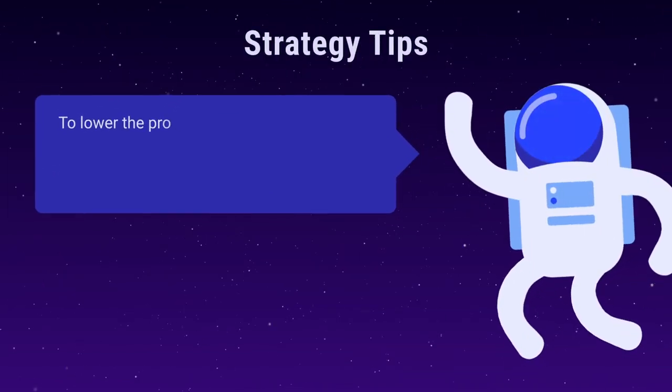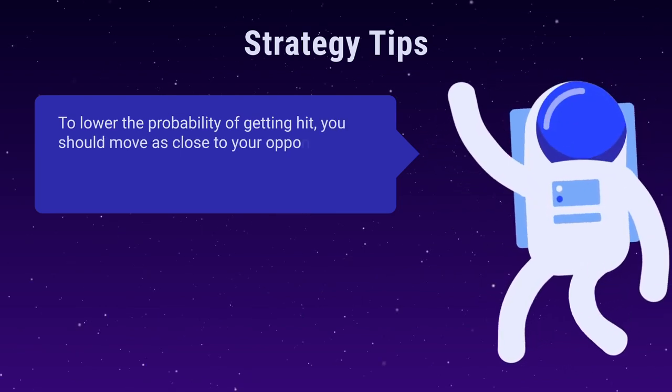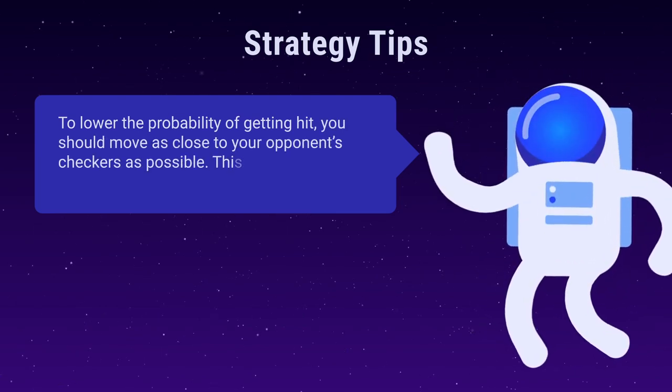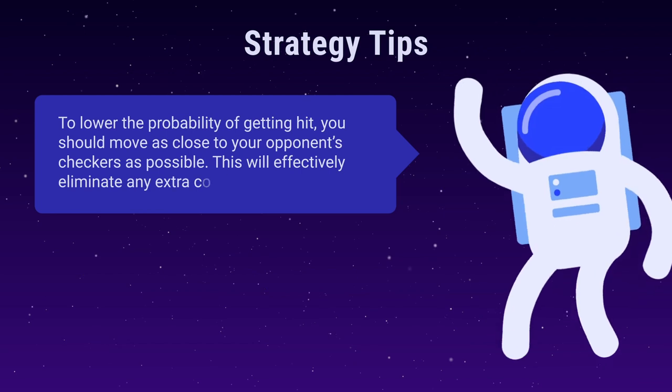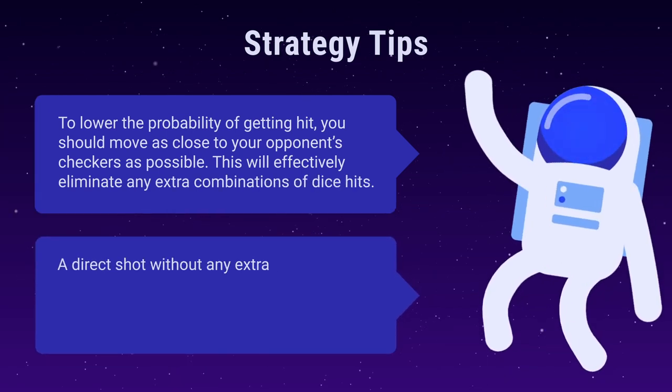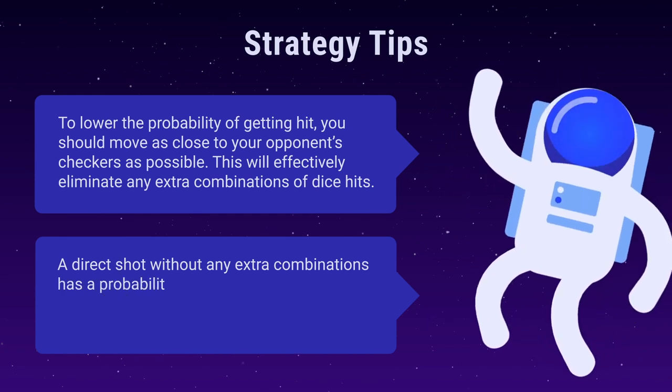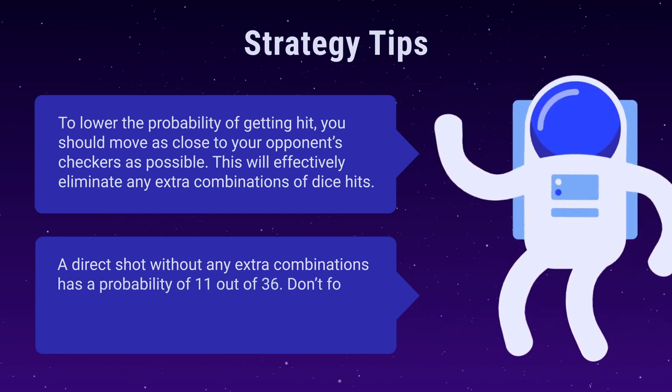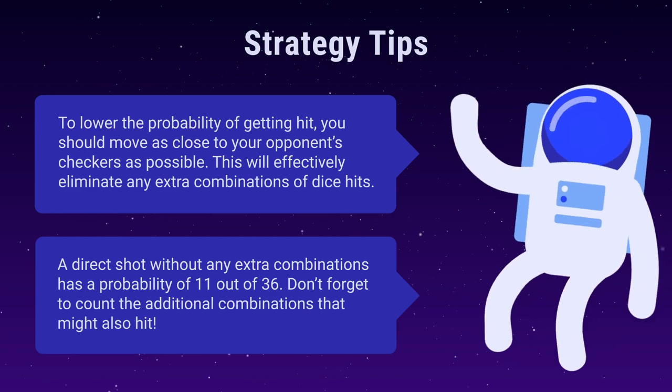Lower the probability of getting hit. You should move as close to your opponent's checkers as possible. This will effectively eliminate any extra combinations of dice hits. A direct shot without any extra combinations has a probability of 11 out of 36. Don't forget to count the additional combinations that might also hit.